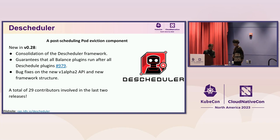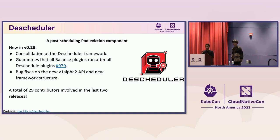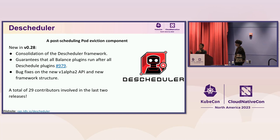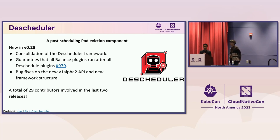Another project in SIG Scheduling is the Descheduler, which as its name suggests is kind of the opposite — you have lots of running pods and certain policies for when they need to be evicted. In the new version 0.28, the Descheduler also follows a similar model to the scheduler with a Descheduler framework, allowing more contributors to implement different eviction policies as plugins. This new version has two types of plugins — balance and deschedule — with guarantees that balance plugins run before all deschedule plugins, plus some bug fixes on the v1alpha2 API.